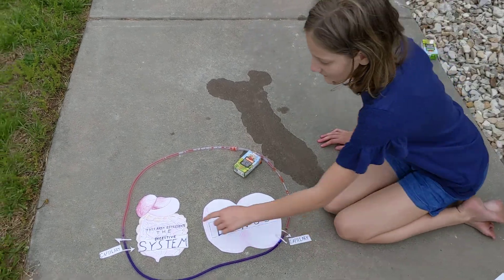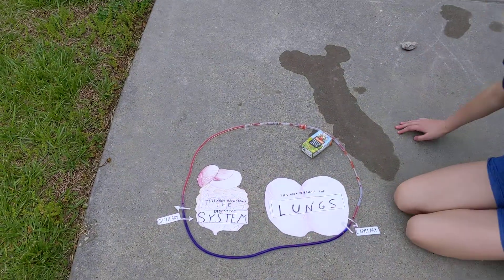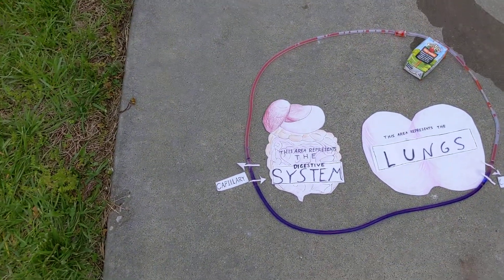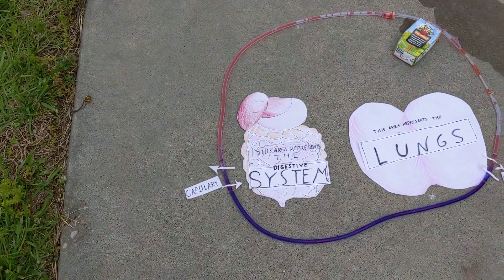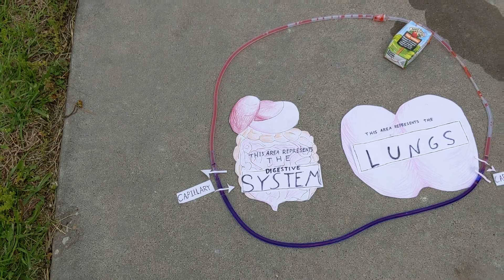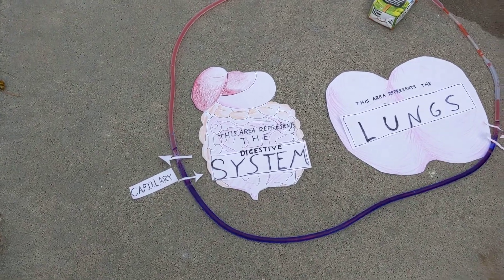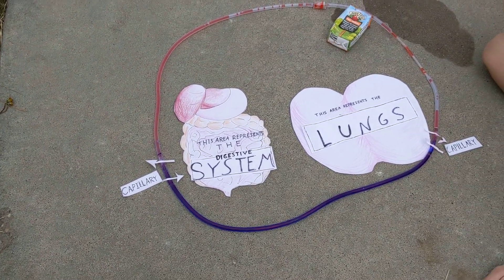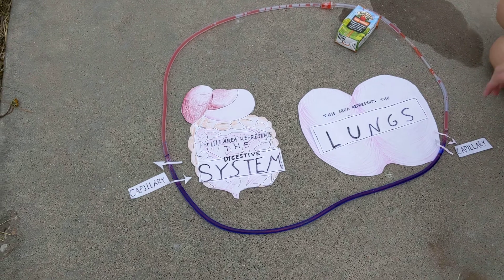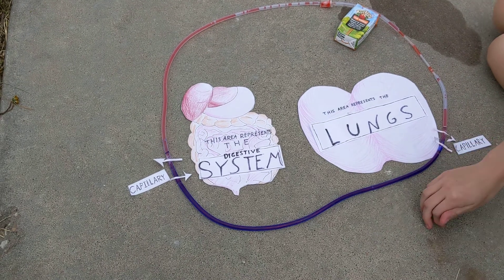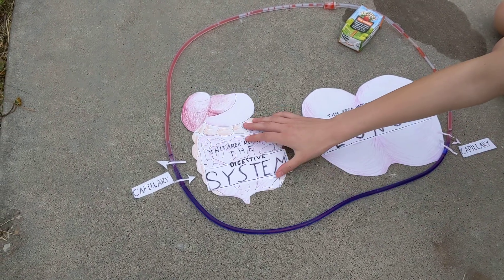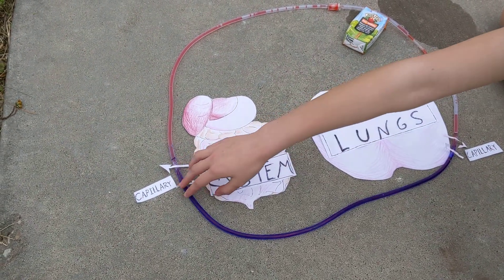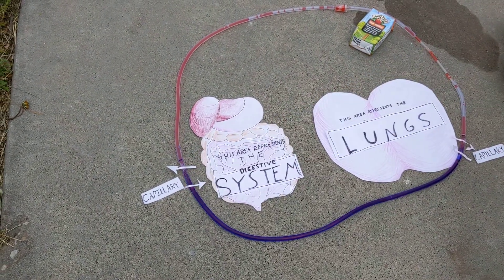Let's start with the digestive system. When the digestive system is digesting, it creates some chemicals that can become toxic when they reach high levels. These chemicals are sent into the capillaries.